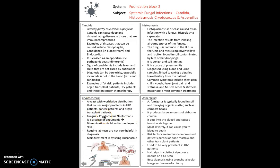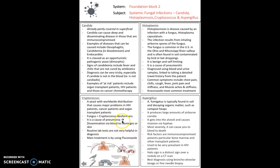Cryptococcus is a systemic fungal infection — a yeast with worldwide distribution that causes major problems in HIV patients, cancer patients, and organ transplant patients, i.e., immunocompromised individuals. The fungus Cryptococcus neoformans is a cause of pneumonia and can also cause meningitis, disseminating via the blood to the meninges and skin. Routine lab tests aren't very helpful here, so alternative diagnostic methods must be used.